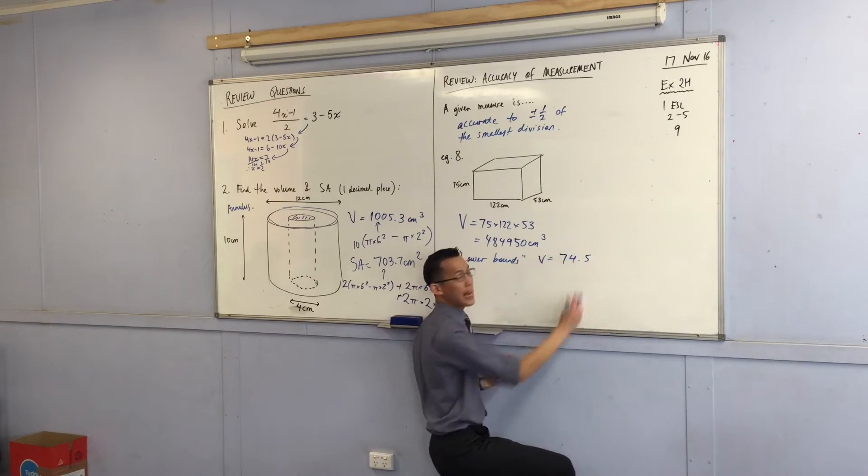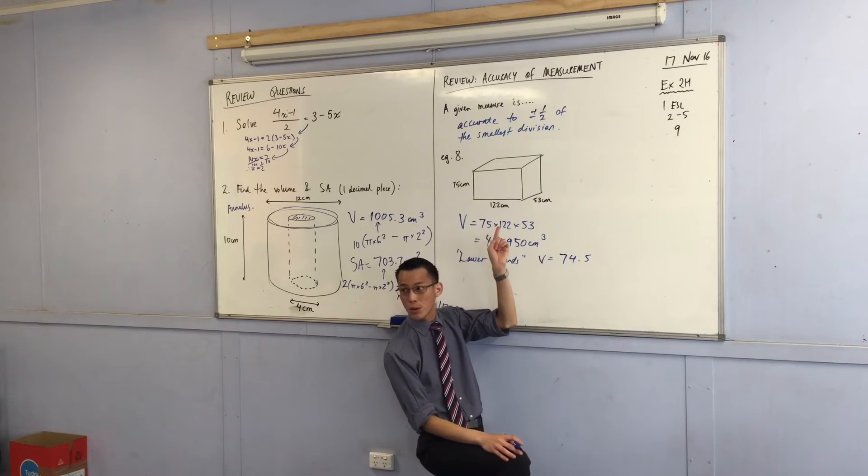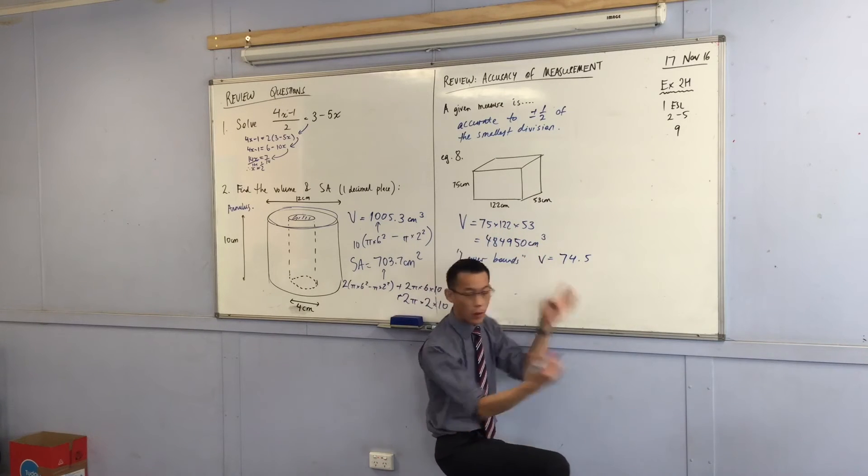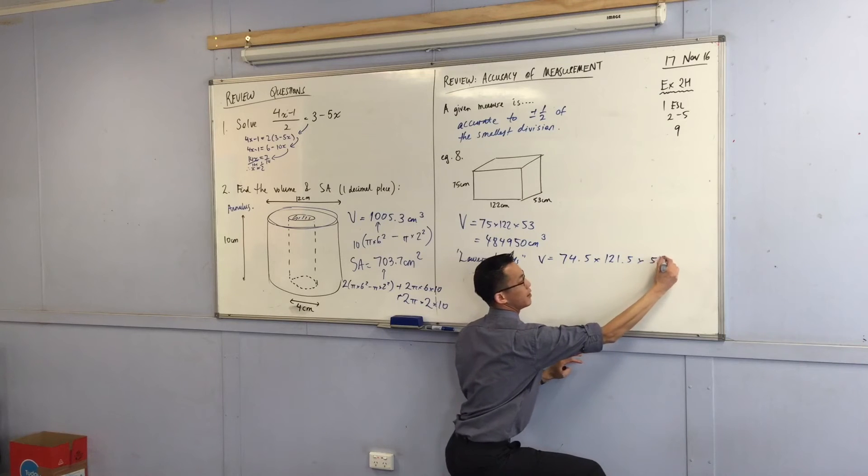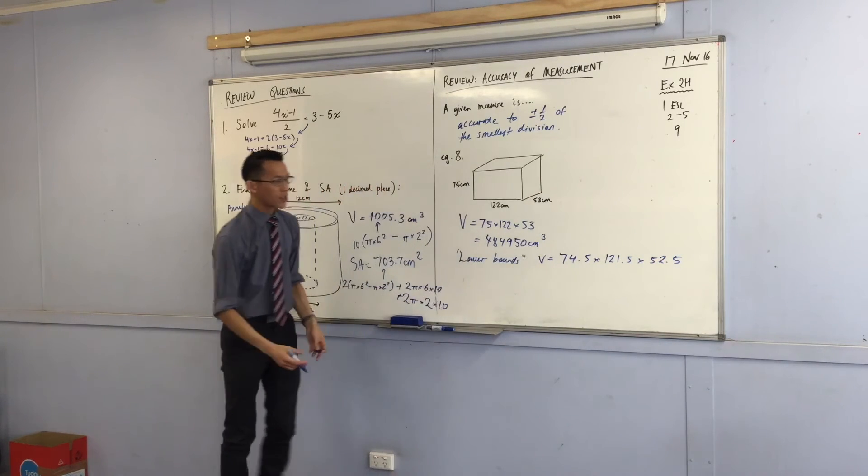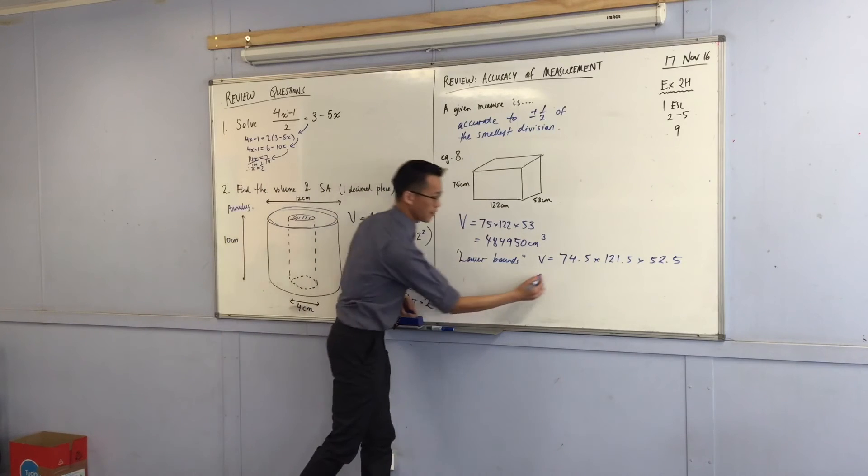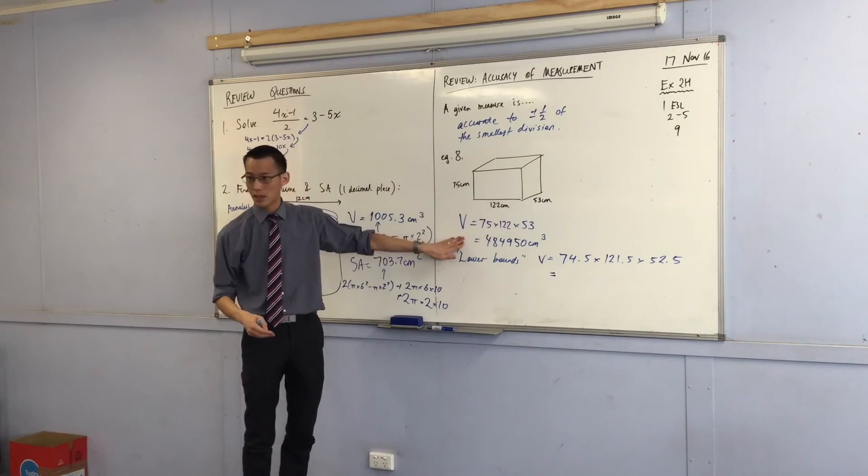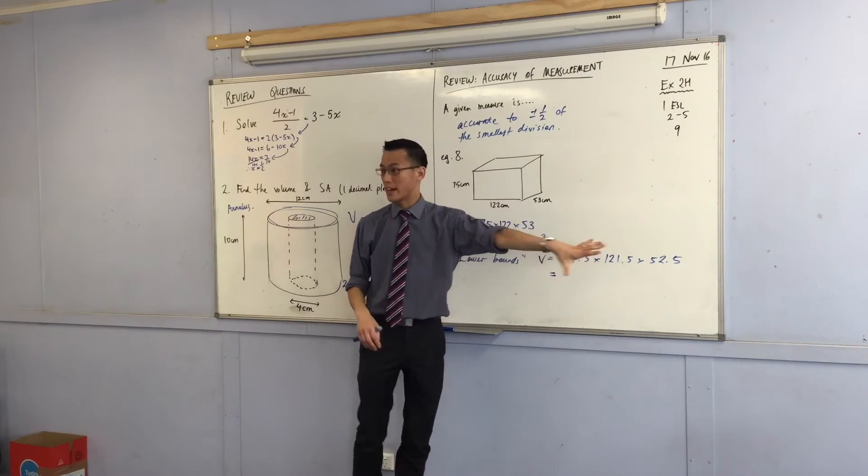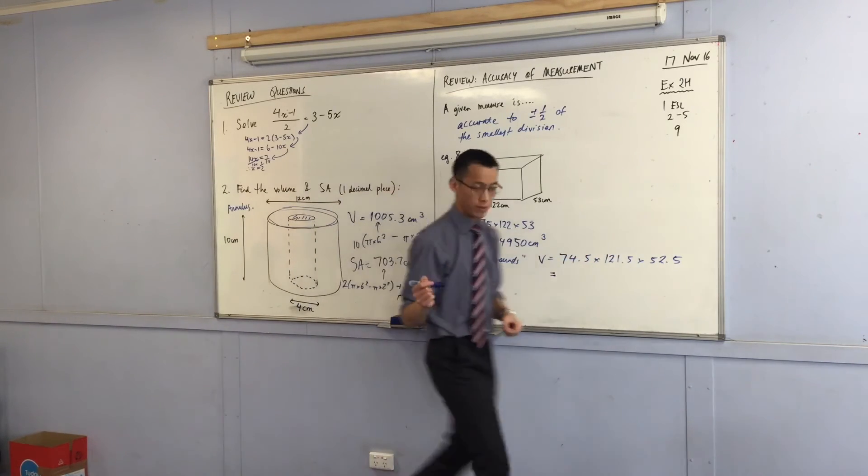In exactly the same way, the 122 could have been 121.5 and the last one could have been 52.5. So it's only half a centimeter difference. What kind of difference will it result in the volume? Well, again, you turn to your calculator and we're going to get something with decimal places, aren't we?